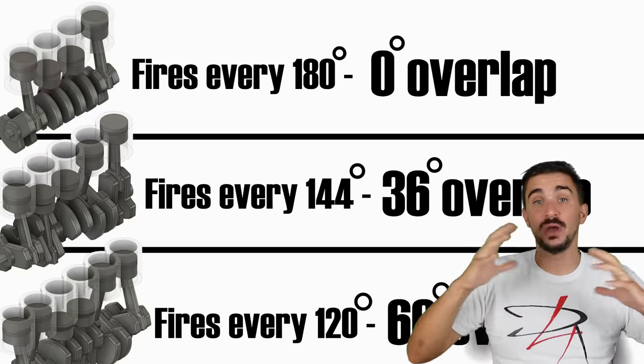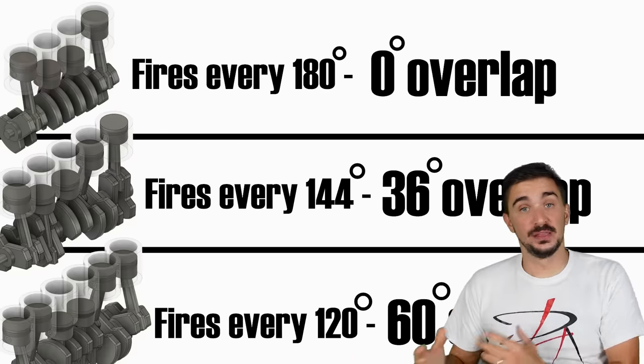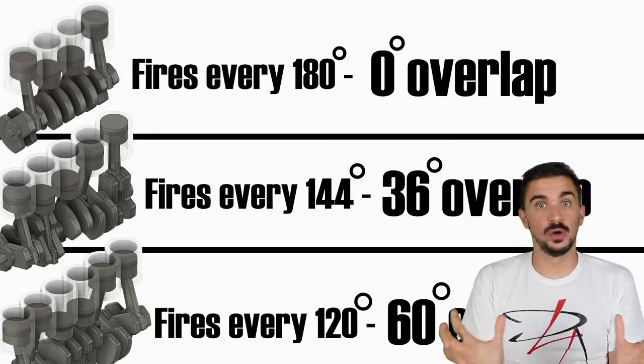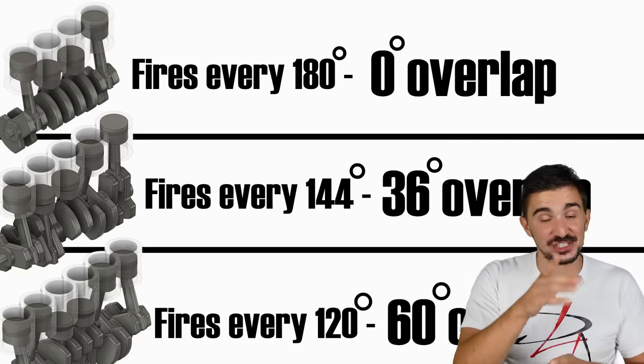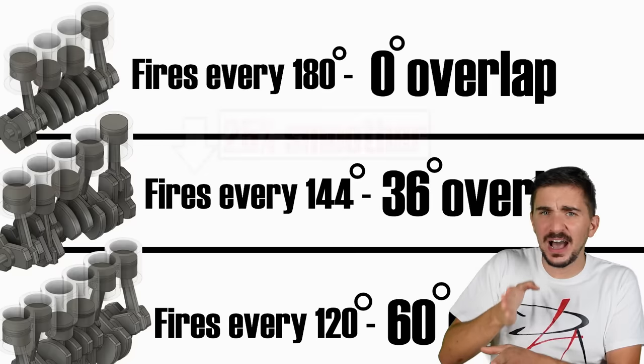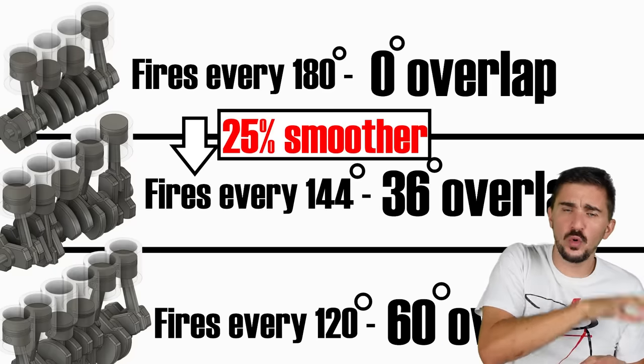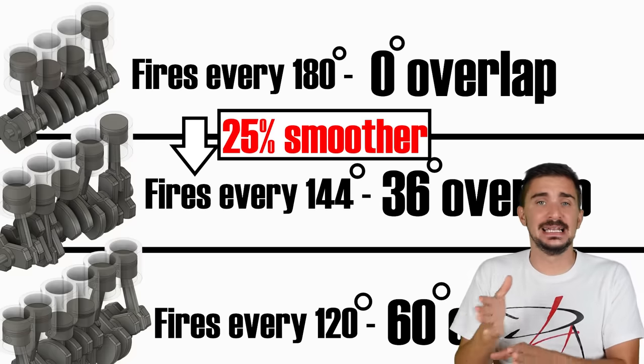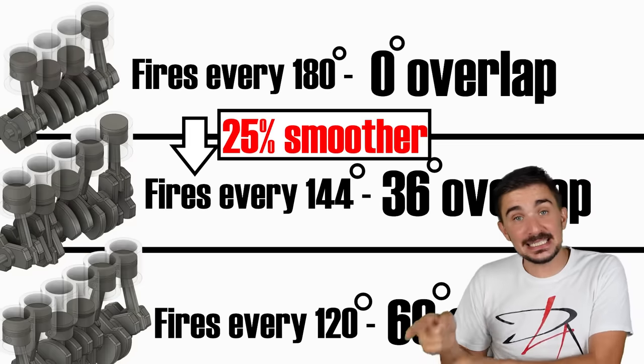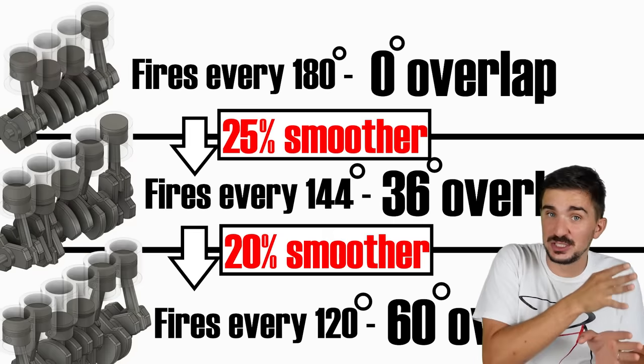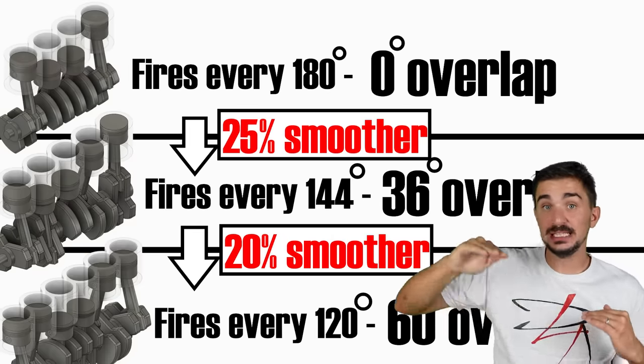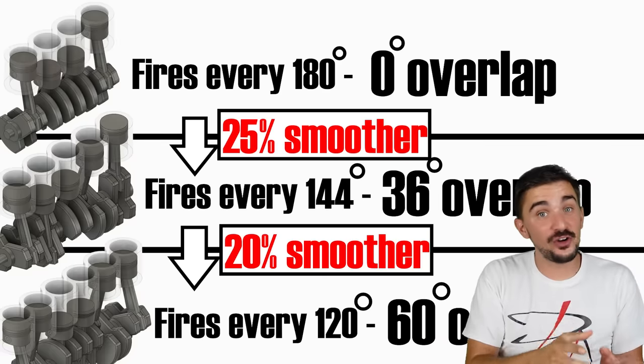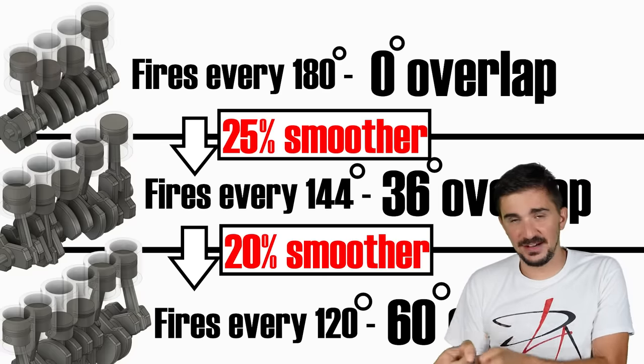Now, the more power stroke overlap you have, the smoother the engine. This is why V12 engines are so incredibly smooth. But here's the catch. The Inline 5 has 25% more power stroke overlap than the Inline 4. It's 25% smoother than the Inline 4. But the Inline 6 is only 20% smoother than the Inline 5. So the jump in smoothness is greater in the favor of the Inline 5.